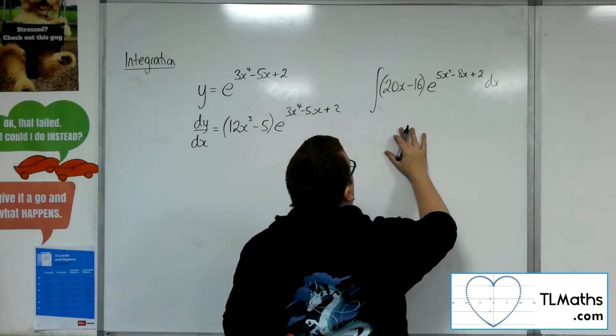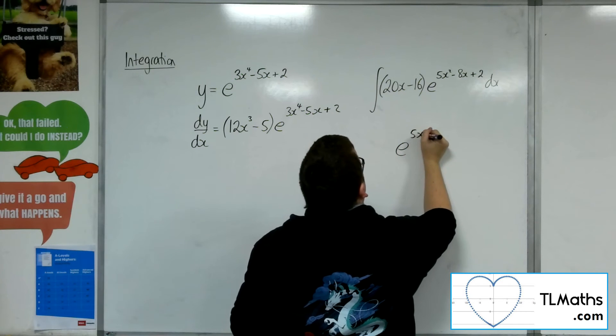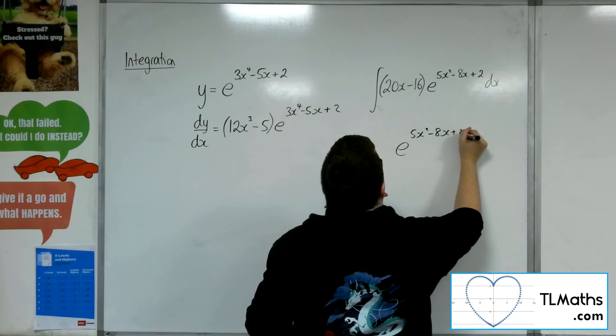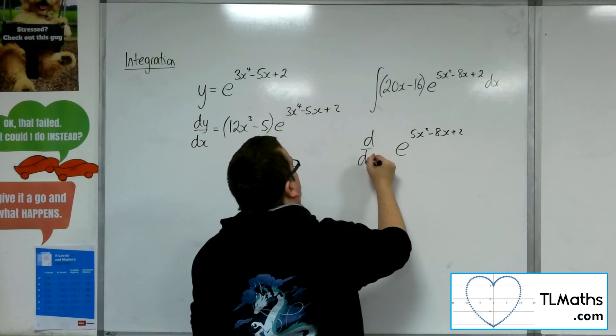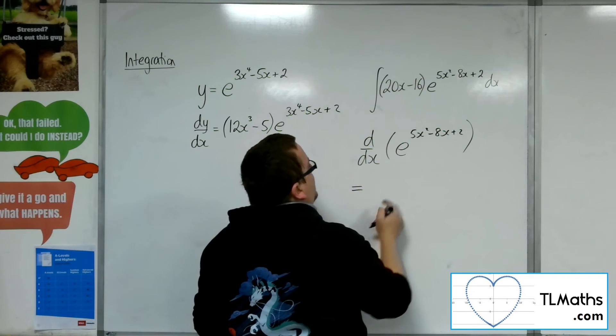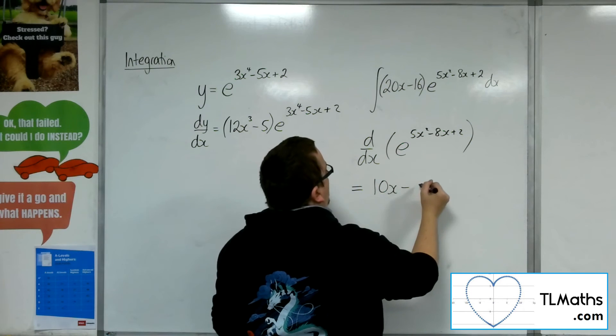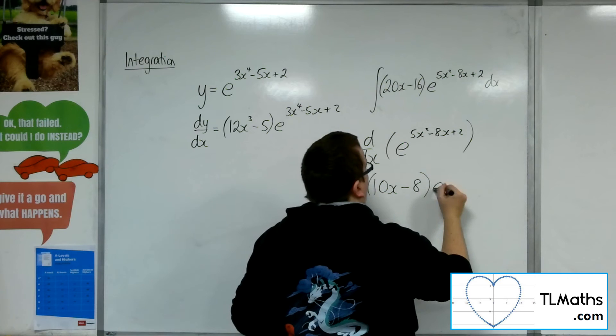So what have I got then? Well, if I think about having e to the 5x squared minus 8x plus 2 and differentiating that, then I'm going to get the 10x minus 8 coming out to the front.